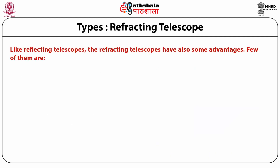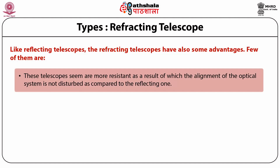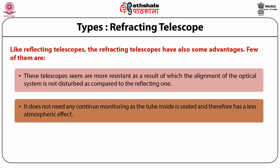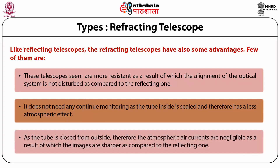Like reflecting telescopes, refracting telescopes also have some advantages. First, refracting telescopes are more resistant to disturbance, as a result of which the alignment of the optical system does not get disturbed as compared to the reflecting one. Second, it does not need any kind of continuous monitoring as the tube inside is sealed, and therefore it has less atmospheric effect. In fact, as the tube is closed from outside, the atmospheric air currents are negligible, resulting in images that are very sharp compared to the reflecting ones.